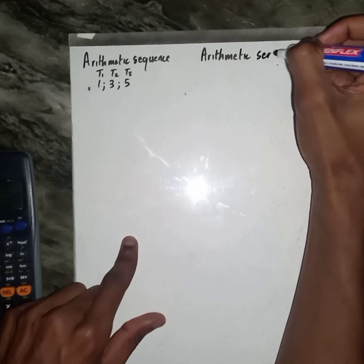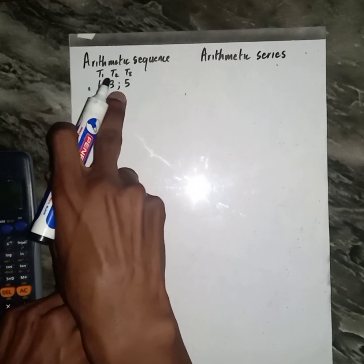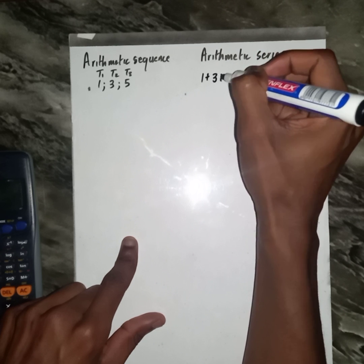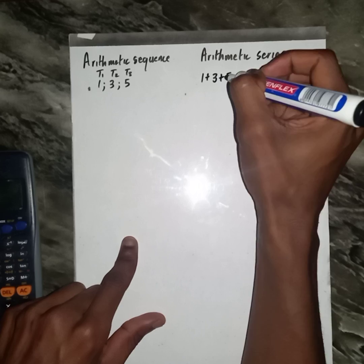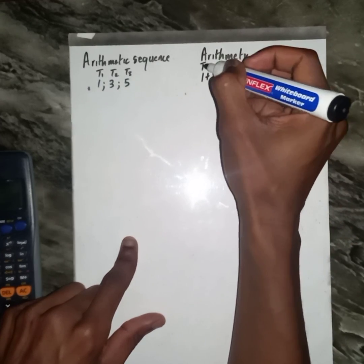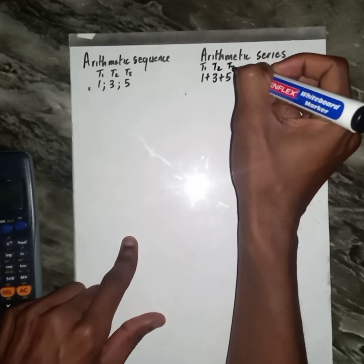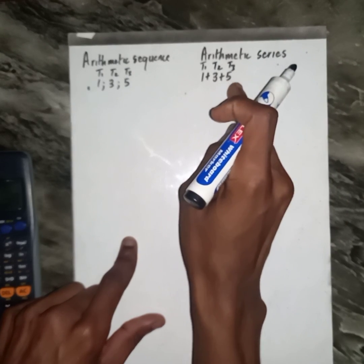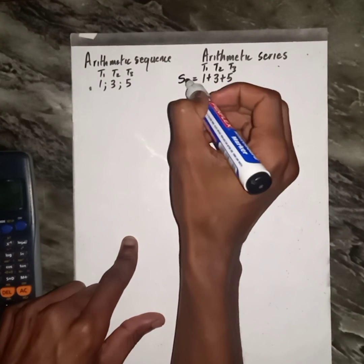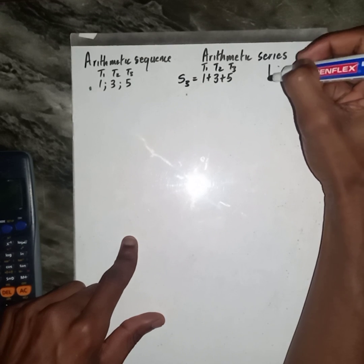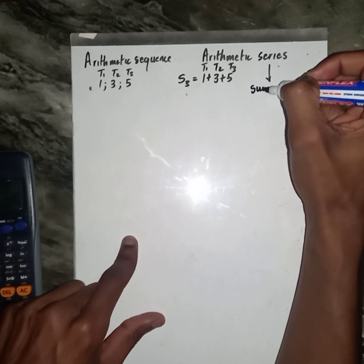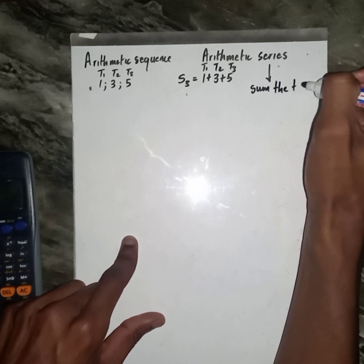Then if now we move to another concept which is series — arithmetic series — we no longer have a comma. Instead now we have a plus sign, or it can be a negative sign in between those. Somehow now we add those terms. We add term one, term two, term three in this case. How many terms do we have? Three terms. Somehow we add three terms. We call it a series — it's when now we sum the terms.